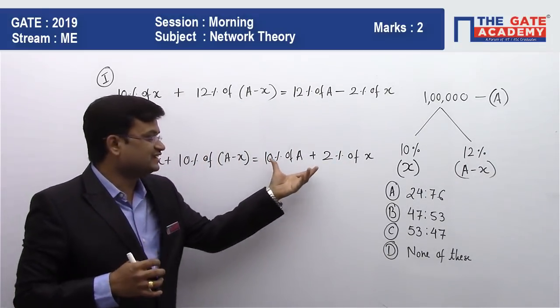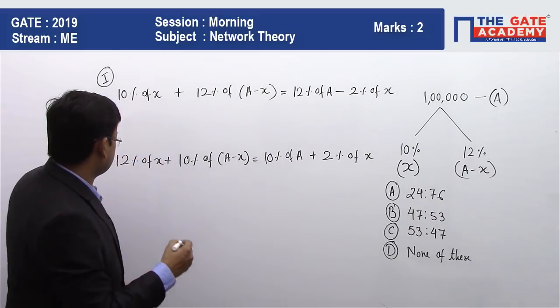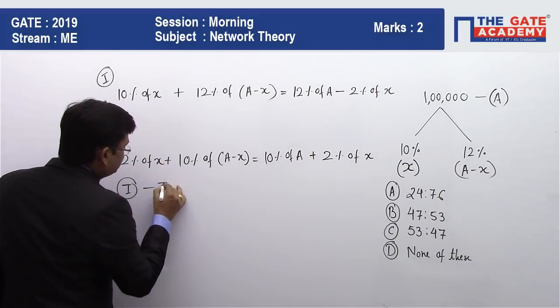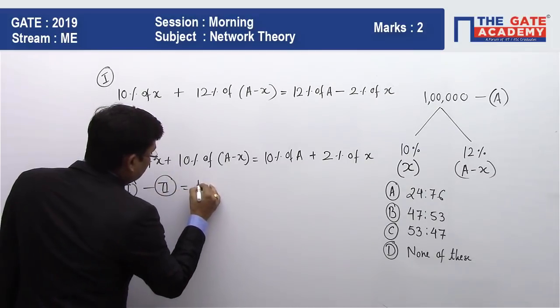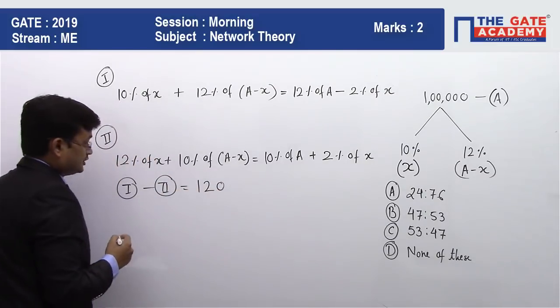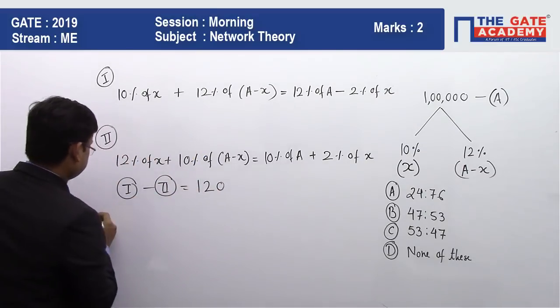Now, the question says that in case 2, the total overall profit is reduced. So case 1 minus case 2 equals 120 rupees. Let's write this equation.